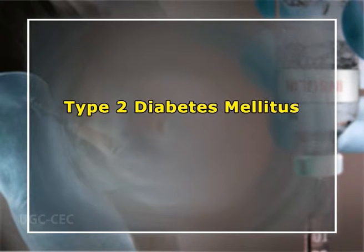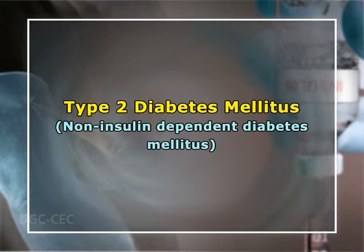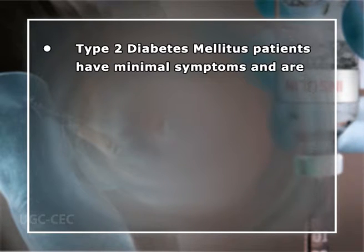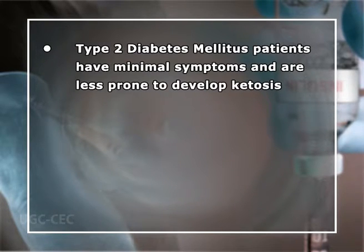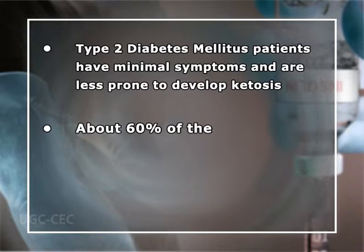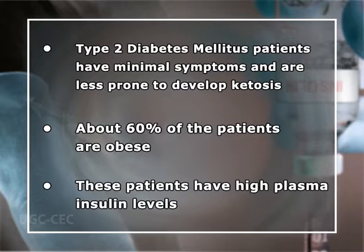Type 2 diabetes mellitus, formerly known as non-insulin-dependent diabetes mellitus, accounts for most diabetic patients. The disease is due to decreased biological response to insulin — otherwise called insulin resistance — so there is a relative insulin deficiency. These patients have minimal symptoms and are less prone to develop ketosis. About 60% of the patients are obese. These patients have high plasma insulin levels.